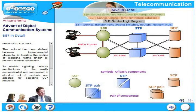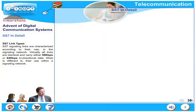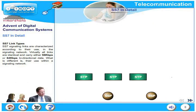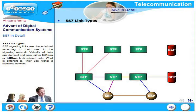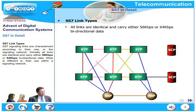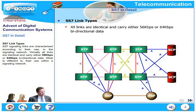To enable signaling network architectures to be easily communicated and understood, a standard set of symbols was adopted for depicting SS7 networks. SS7 signaling links are characterized according to their use in the signaling network. Virtually all links are identical and carry either 56 or 64 kbps bidirectional data. There are several types: A-link, B-link, C-link, D-link, E-link, and F-link.